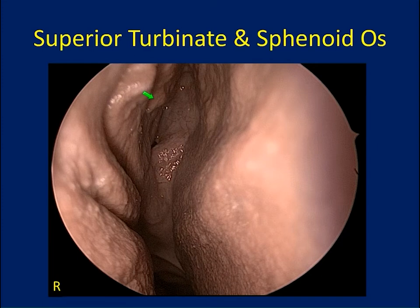For reference, here you can see the entrance into the nasopharynx, or the choana. Then inferiorly and superiorly, you identify the superior turbinate and the natural sphenoid ostium.